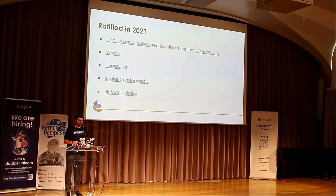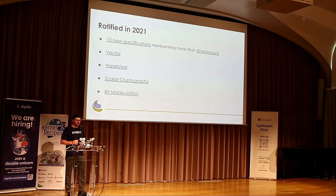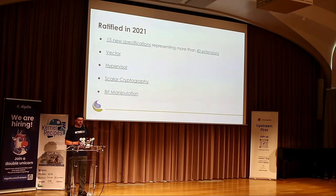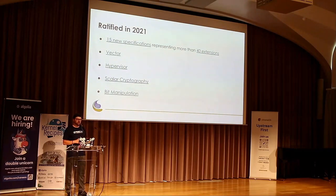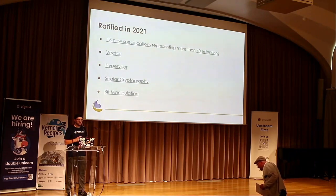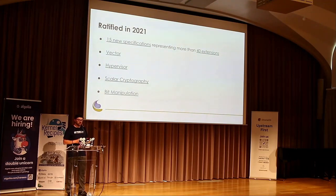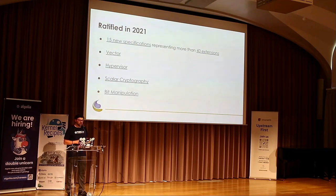2021 was a big year — back in December, 15 new specifications were ratified, producing more than 40 extensions. Some notable ones: Vector, which provides scalable vector operations with binary compatibility across different vector lengths (inspired by original Cray vector processing); Hypervisor; Scalar Cryptography; and Bitmanip.